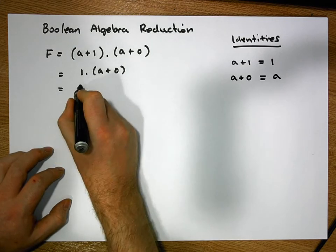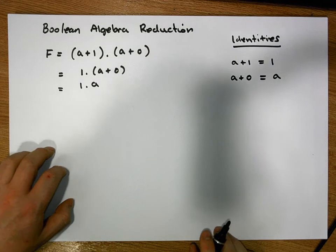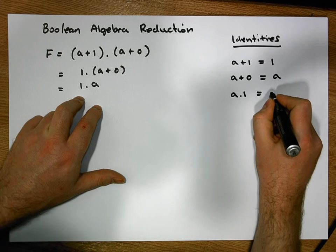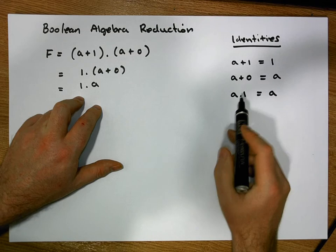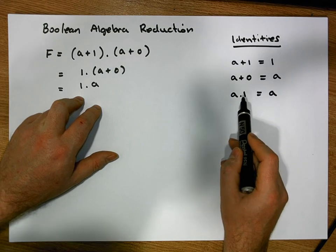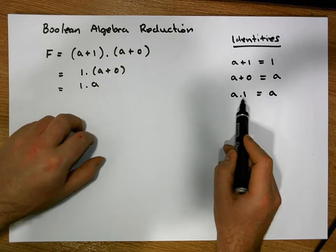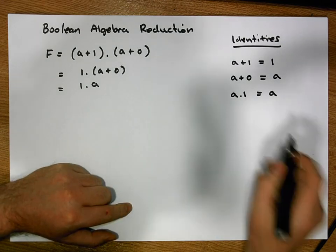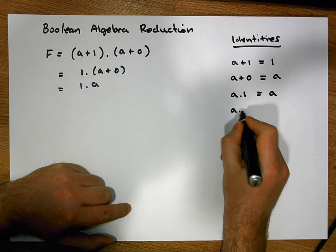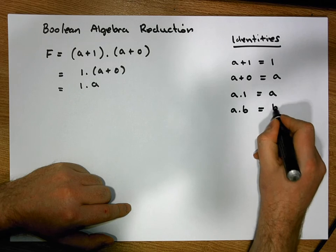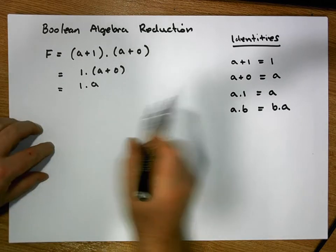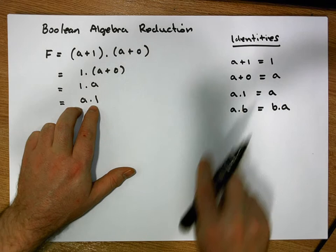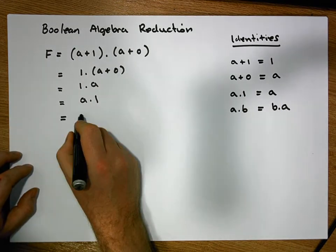So in this situation, this becomes 1 AND'd with a. We have another important identity which says that a AND'd with 1 is simply equal to a — this is the identity for AND. However, what we have here is 1 AND'd with a, so we use the Commutative Law for AND, which says that 1 AND'd with a is the same as a AND'd with 1. Now we can rely on our Identity Law for AND to tell us this is equivalent to a.